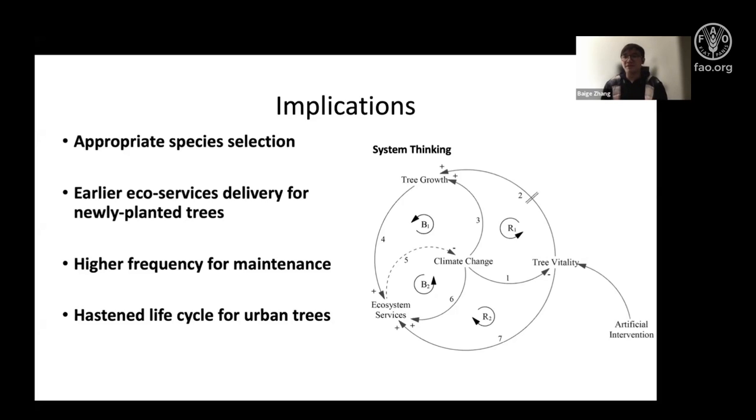Last, we identified a hastened life cycle for urban trees. As tree grows up, the value of ecosystem services and cost of maintenance will increase accordingly. But after a certain age, the value for ecosystem services will keep stable, but the cost will continue increasing. That means after that certain age, we need to replace the tree for the cities. But climate change will shorten the period before we need to replace them.